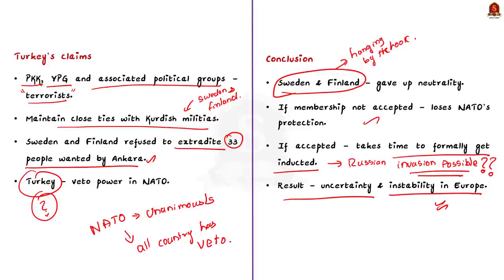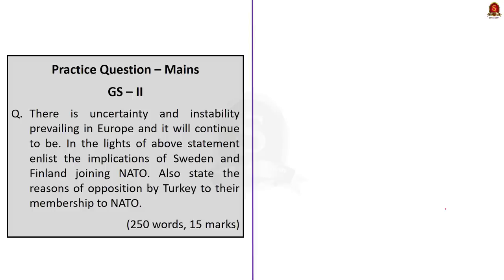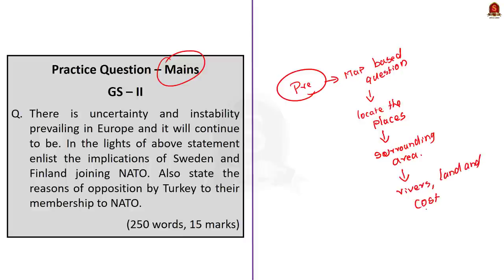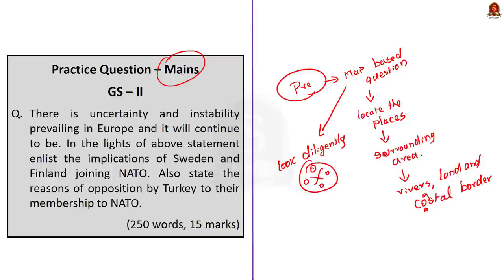The points we discussed today will be useful for your mains examination. For prelims, we saw a lot of places in Europe in our discussion, with maps displayed. Take it upon yourself and locate these places in your atlas. Look at the surrounding areas, note down important geographical features, maritime and land borders, and important rivers — their origin and destination. It is highly possible that UPSC might ask a map-based question from this area, so diligently spend about one hour studying all the areas discussed today in your atlas.